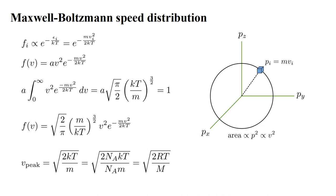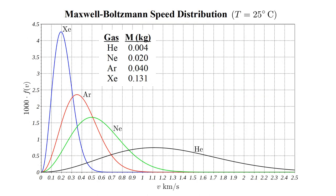F of V equals zero for V equals zero and approaches zero for large V. In between, it reaches a peak at speed V_peak equals the square root of 2kT over M. Multiplying numerator and denominator by Avogadro's number, this can also be expressed as the square root of 2RT over big M, where R is the gas constant and big M is the molar mass. Here are plots of this distribution for the noble gases helium, neon, argon, and xenon at 25 degrees Celsius. For lighter atoms, the distribution is spread out over larger speeds.